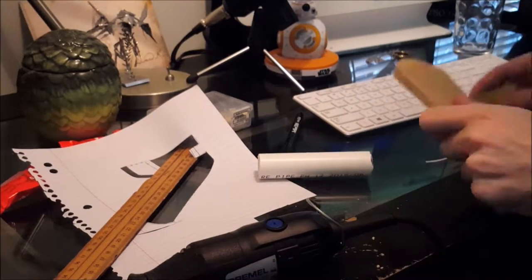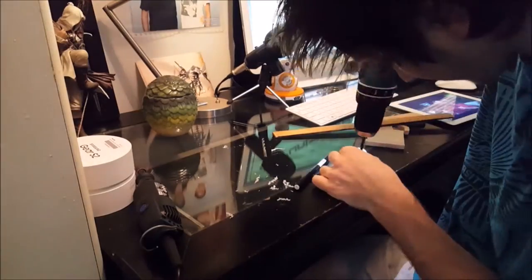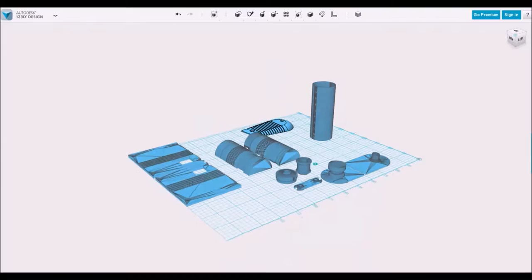For the barrel, I used a piece of 30mm PVC pipe and then used a regular drill to drill holes in. The rest of the parts were made using my 3D printer.